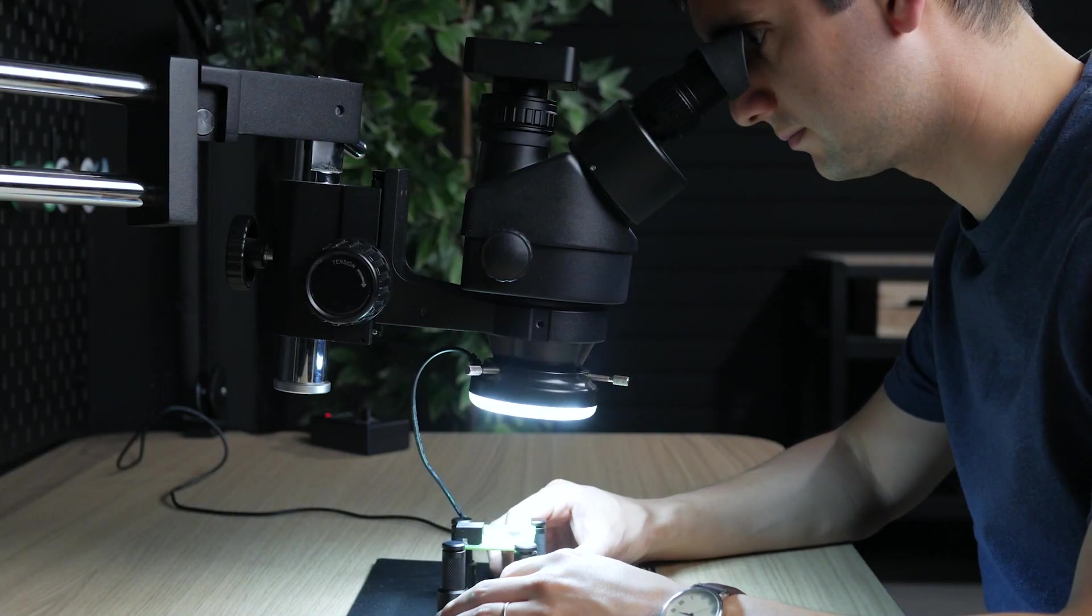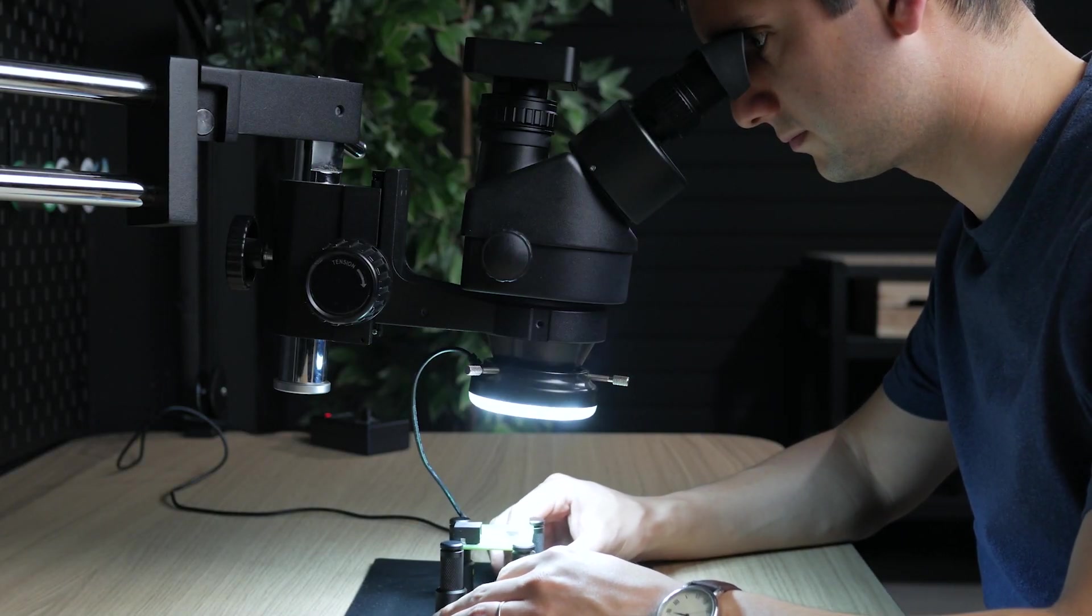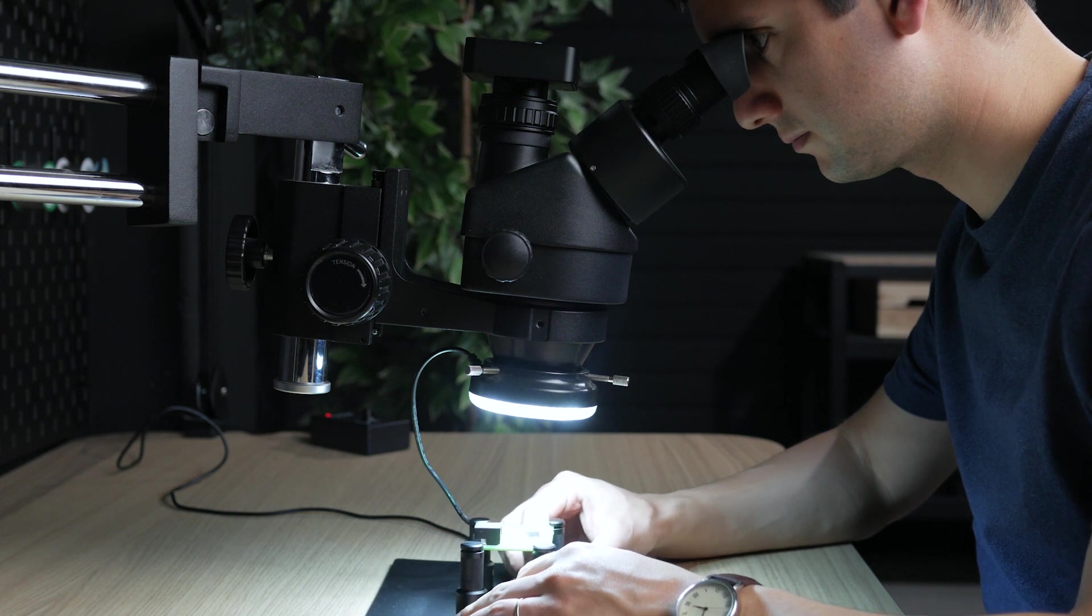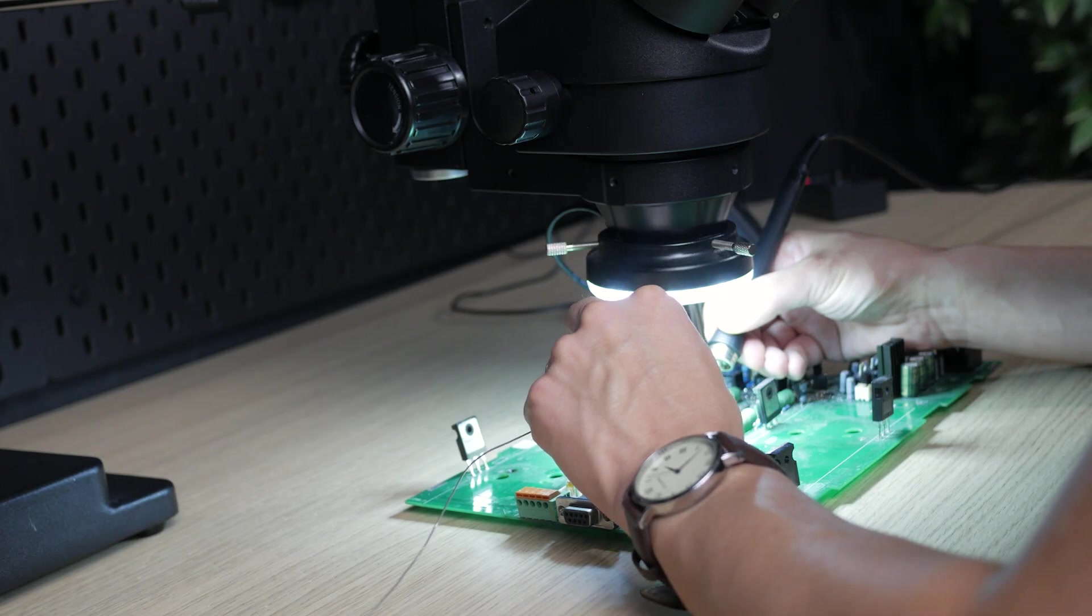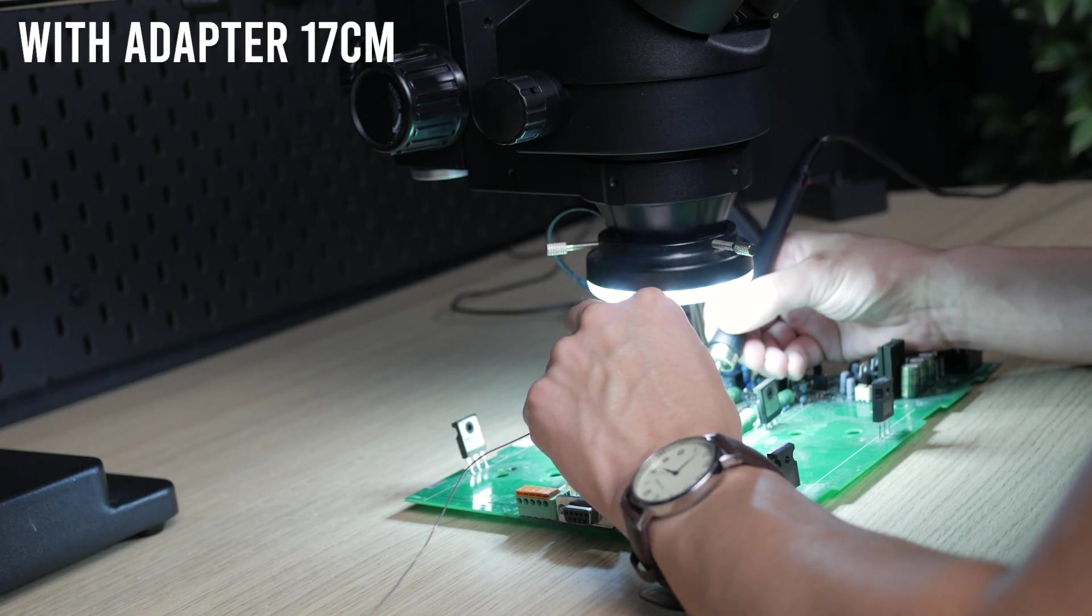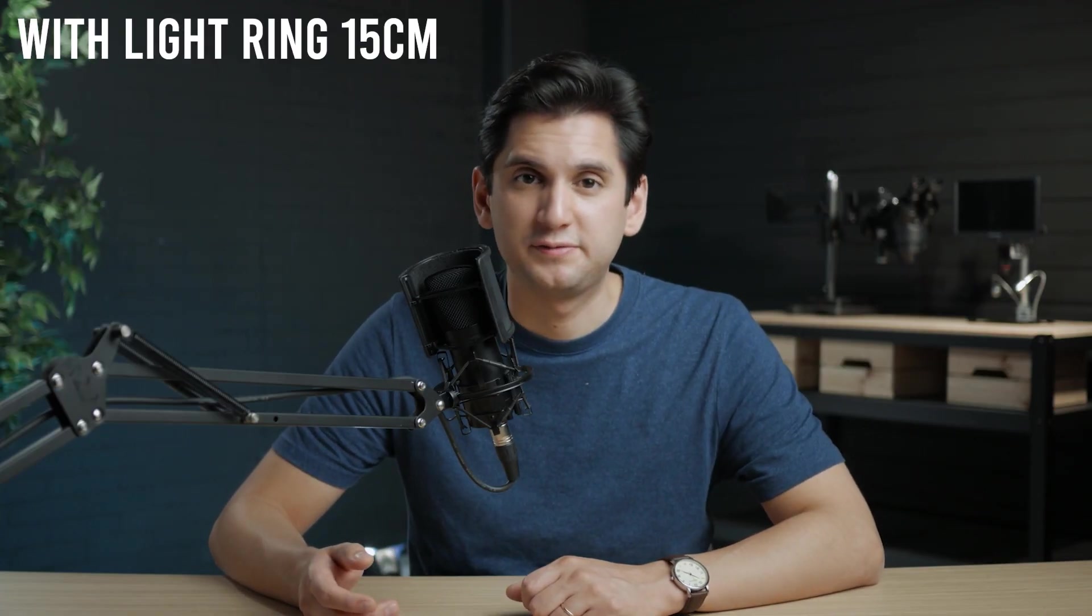A stereo microscope has significantly more horizontal space under the microscope than a digital microscope because of its arm. The working distance of this microscope is around 10 centimeters. An adapter can be used to decrease the magnification by half but increase the vertical working distance to 17 centimeters. Attaching a light ring will lower this to 15 centimeters.